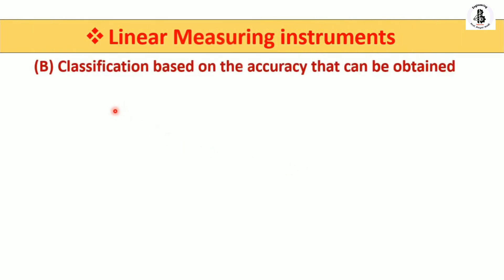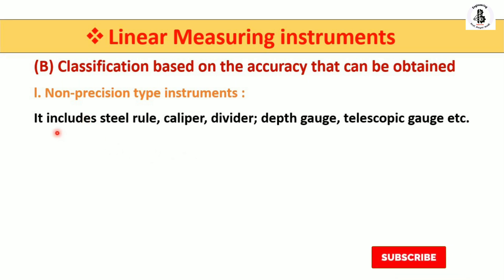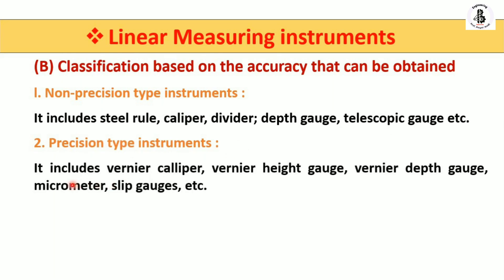In the case of linear measuring instruments, the second classification is based on the accuracy that can be obtained by the measurements. Non-precision type instruments include steel rules, calipers, dividers, depth gauges, and telescopic gauges — most involving indirect kinds of measurements, with accuracy depending on the least count of the instrument. Precision type instruments include vernier calipers, vernier height gauges, vernier depth gauges, micrometers, and slip gauges. All standard instruments with graduations are considered precision type instruments.